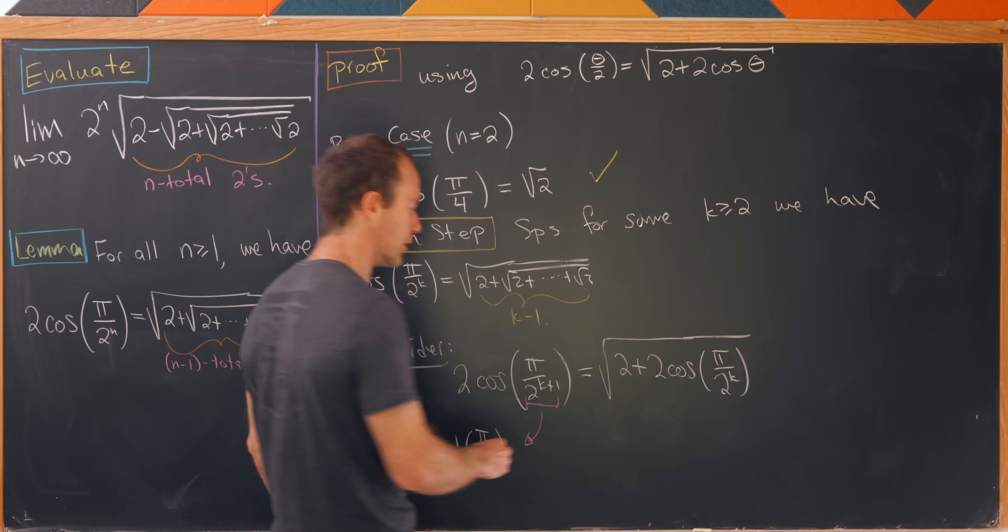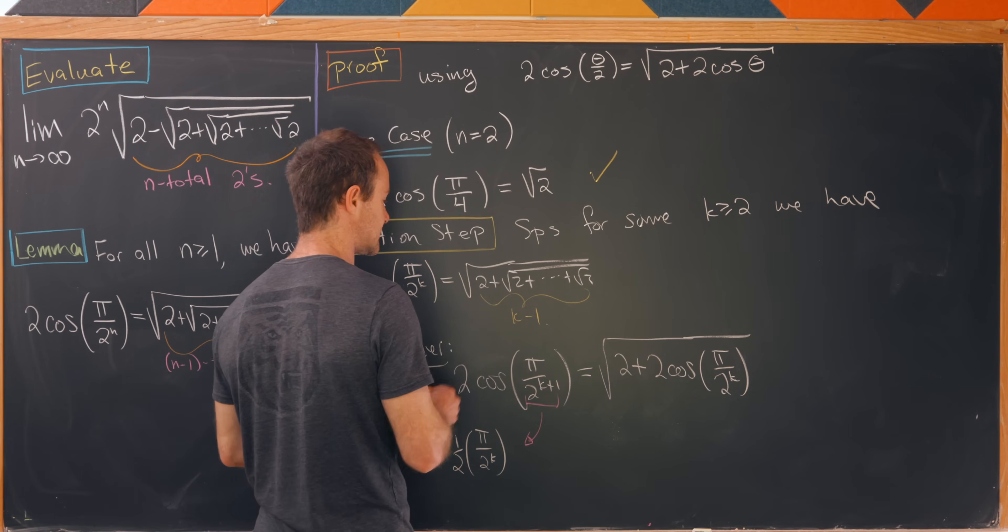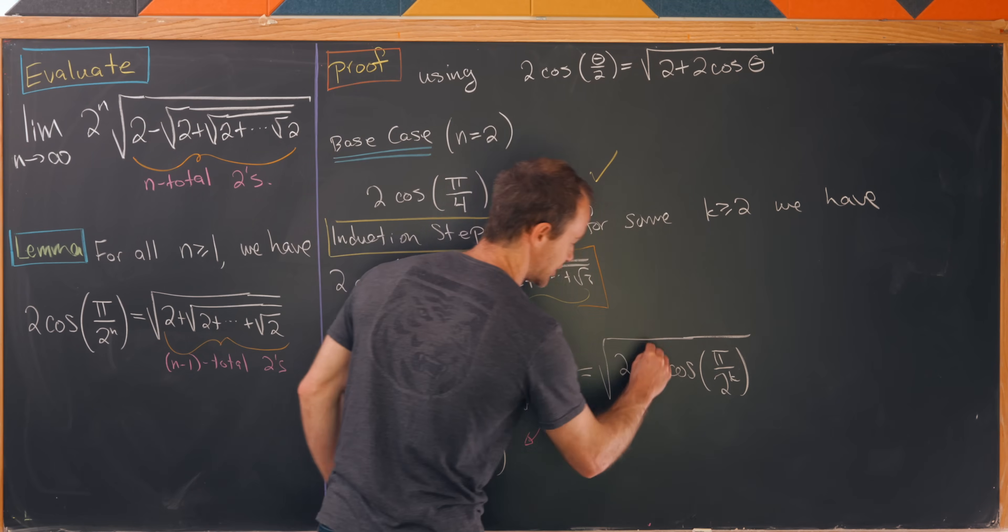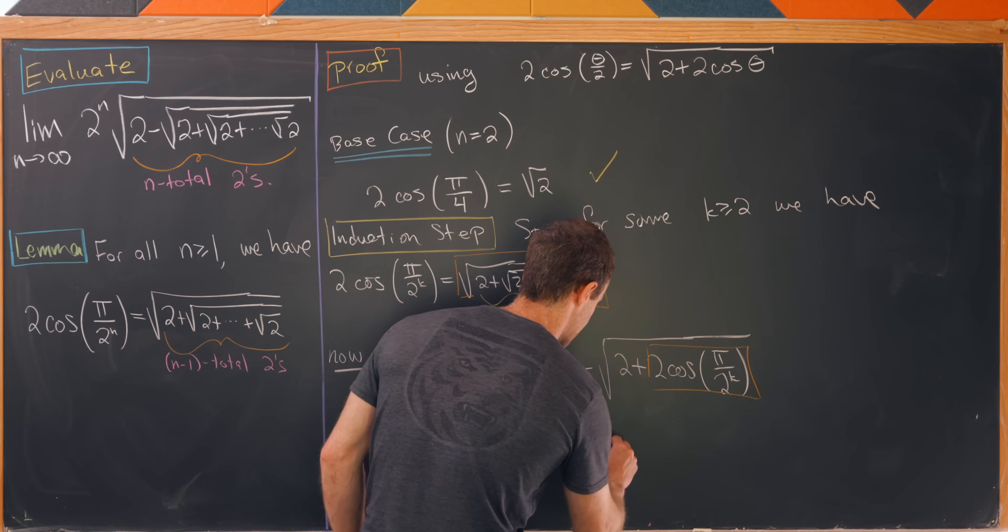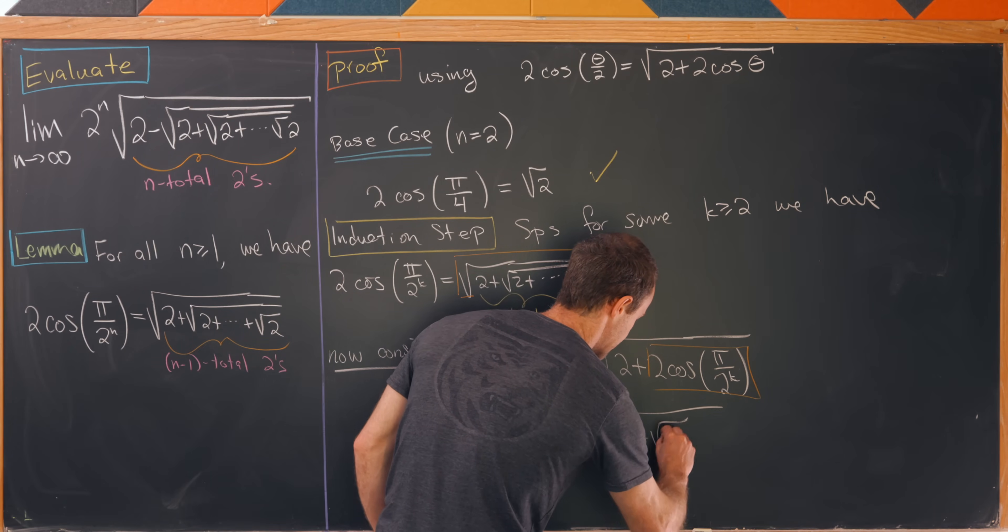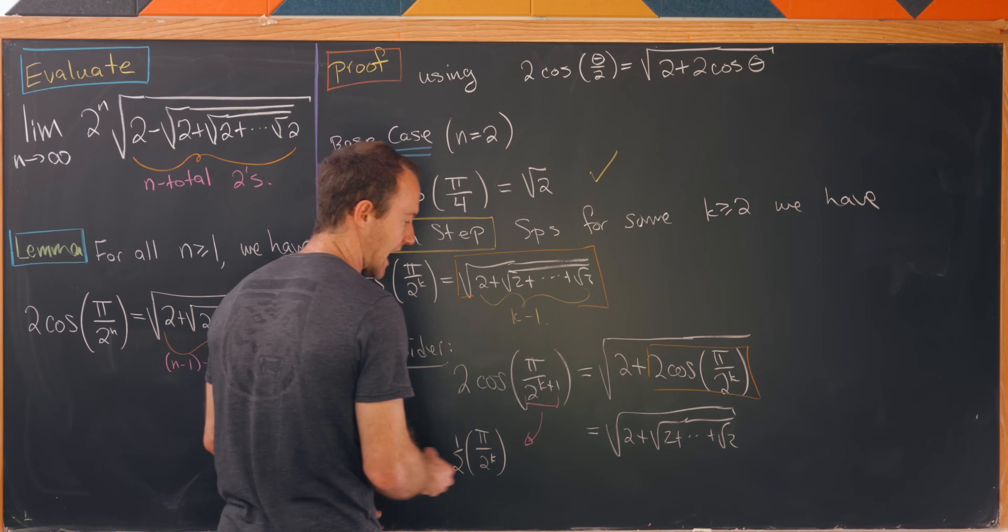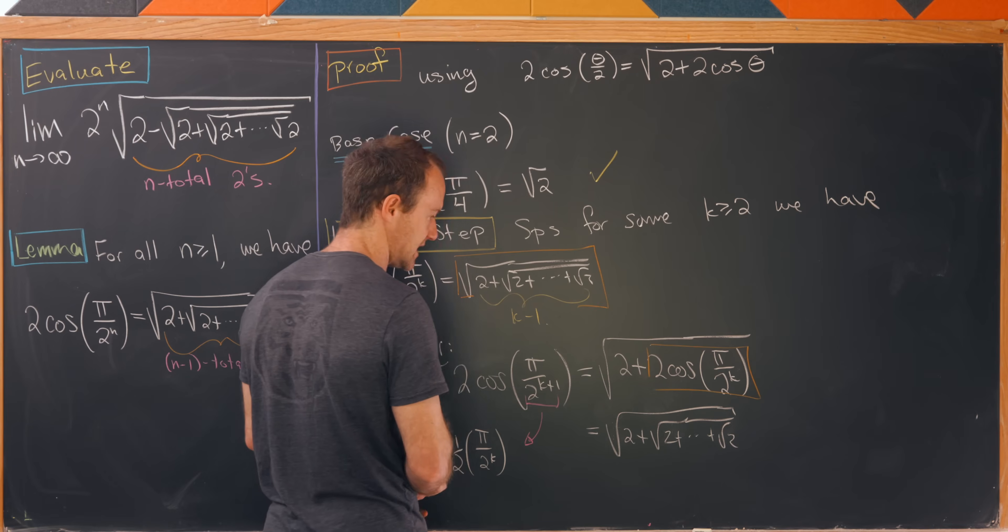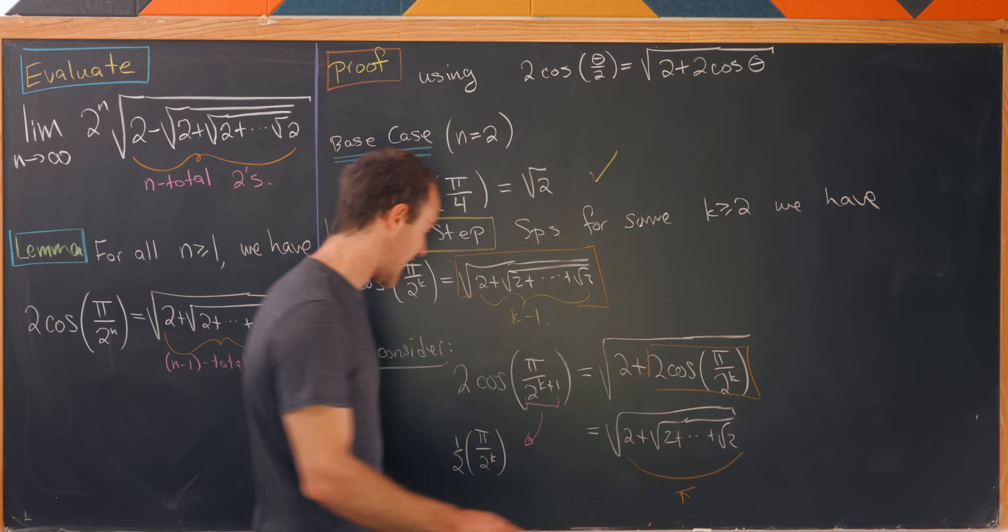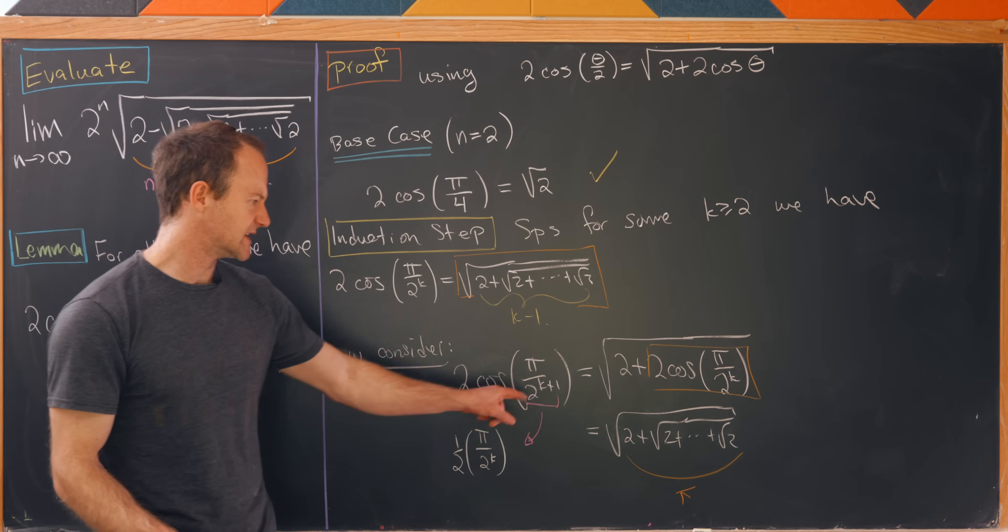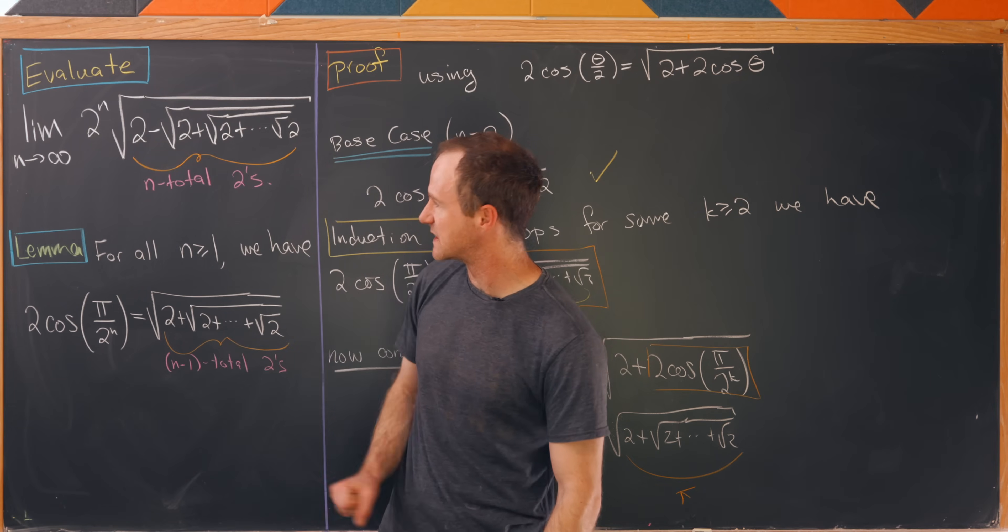But check it out, that's exactly what we want. All we have to do is insert this orange boxed object into this orange boxed spot. That gives us the square root of 2 plus the square root of 2 on and on ending at the square root of 2, where now we have k minus 1 square roots of 2 here and then one right here. So in total we have k square roots of 2. But k is the same thing as k plus 1 minus 1, so we're good to go. That's the proof of this lemma.